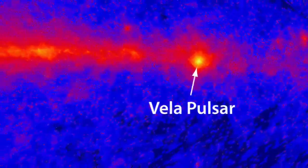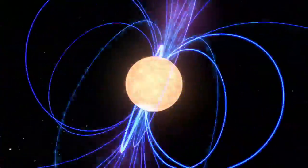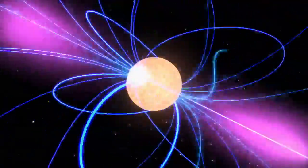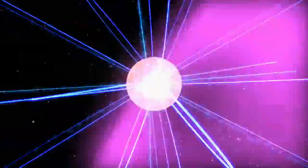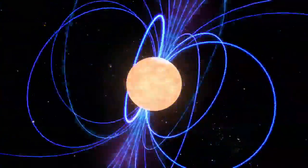The Vela pulsar is the brightest persistent source in the gamma ray sky. Although we don't know all of the details, pulsars emit lighthouse-like beams of radiation. When a beam sweeps past us, we see the emission spike, or pulse, hence the name.